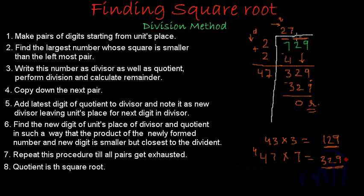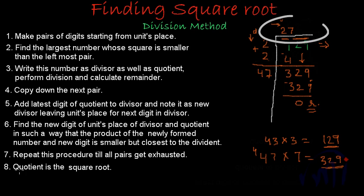All our pairs have now been exhausted. The seventh step says: repeat this procedure till all pairs get exhausted — which they have. The remainder is 0 and all pairs are done, so we move to the eighth step. The eighth step says: the quotient is the square root. The quotient here is 27.